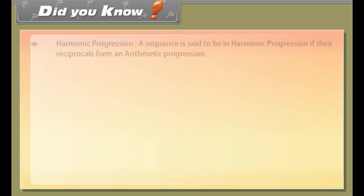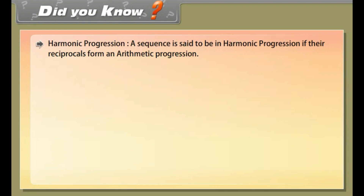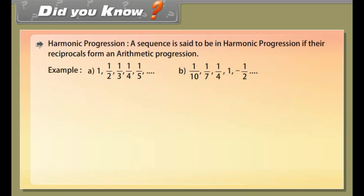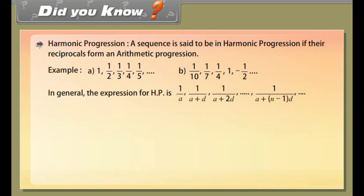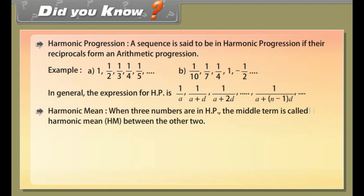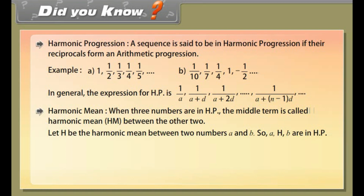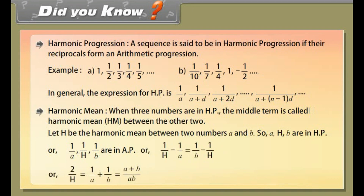Did you know? Harmonic progression: A sequence is said to be in harmonic progression if the reciprocals form an arithmetic progression. Examples: 1, 1/2, 1/3, 1/4, 1/5, ... and 1/10, 1/7, 1/4, 1, −1/2, ... Harmonic mean: When three numbers are in HP, the middle term is called the harmonic mean. Let H be the harmonic mean between A and B, so 1/A, 1/H, 1/B are in AP. Therefore H = 2AB/(A + B).